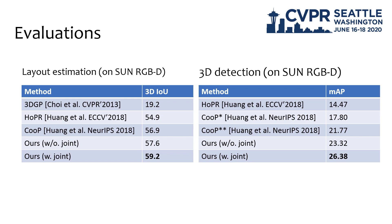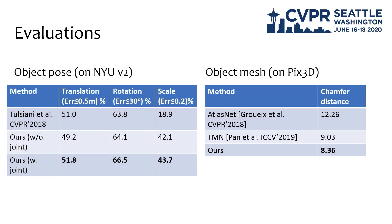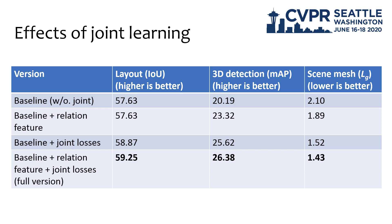In the quantitative results, we evaluate our method on four aspects: layout estimation, 3D object detection, object pose estimation, and mesh reconstruction. We also evaluate our method in two configurations, with or without joint training. The evaluation shows that our joint training strategy consistently improves the method on each metric and reaches the state of the art. Besides, we implemented an ablation study to further explore the effects of each design in our network. The table shows that the relational feature and joint training both contribute to the scores in layout estimation, 3D detection, and mesh generation, and combining them together facilitates the best configuration.